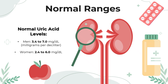So what are the normal ranges of uric acid in the blood? The normal range in men is 3.4 to 7 mg per deciliter of blood, and in women the normal range is 2.4 to 6 mg per deciliter of blood.